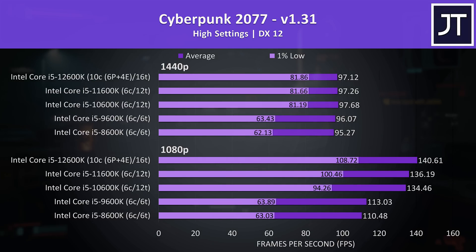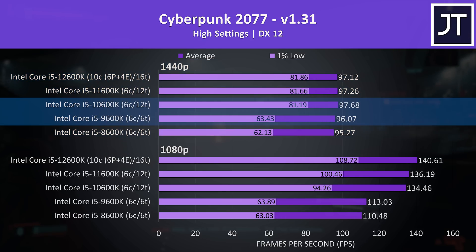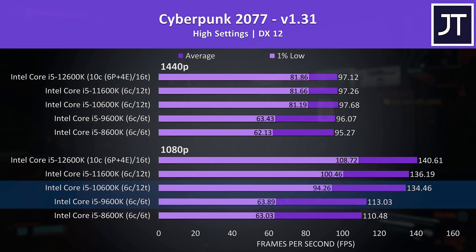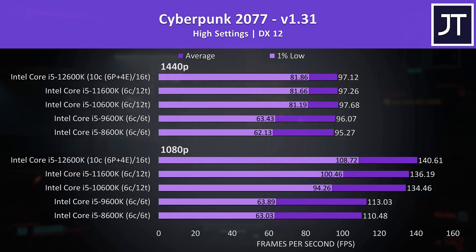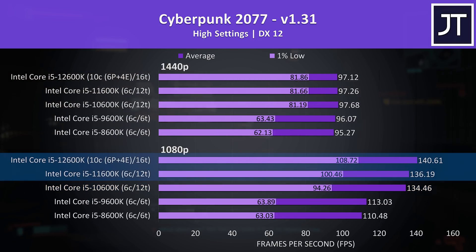Cyberpunk 2077 was tested in the same part of the game on all 5 processors. At 1440p the average FPS difference is basically nothing, but there's a much more obvious difference in the 1% lows, where 10th gen and newer were at least 28% higher. Going from 9th to 10th gen boosts 1% low performance by 48%, so a much more stable experience on 10th gen or newer. 12th gen was just 5% higher in average FPS compared to 10th gen, and 3% higher than 11th gen.